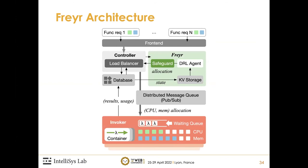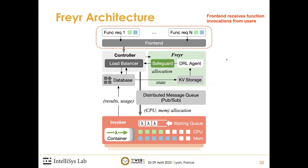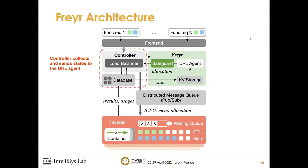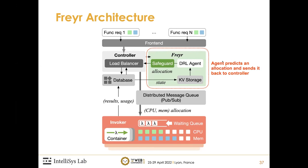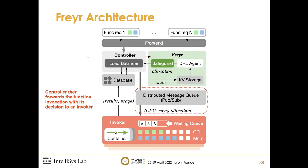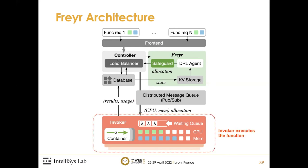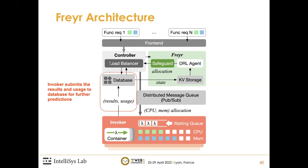Here is an architecture diagram of our proposed Freyr, built on top of Apache OpenWhisk, an open-source distributed serverless platform. Freyr has a front-end that receives function invocations from users. After receiving an invocation, the front-end forwards it to the controller, which collects and sends states to the DRL agent. Freyr's agent predicts an allocation option and sends it back to the controller, which then forwards the invocation with the DRL agent's decision to an invoker node that executes the function and submits results and usage to the database for further predictions.